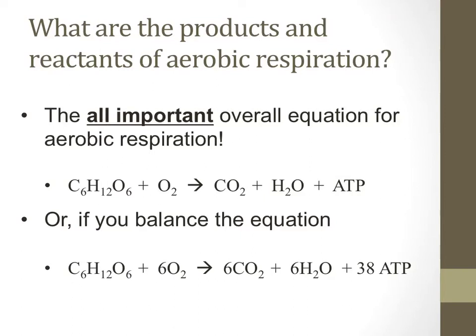There are three different products of cell respiration: CO2, which is carbon dioxide, water, and ATP. Respiration means, in essence, to breathe. The reason that humans expel carbon dioxide when they breathe is that cells give it off as a waste product. The point of cell respiration is to produce energy, so ATP, a high energy molecule, is another sensible product of this process.